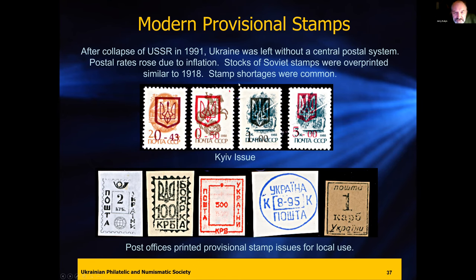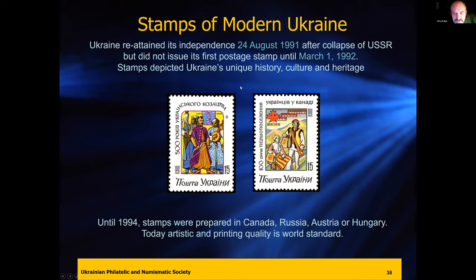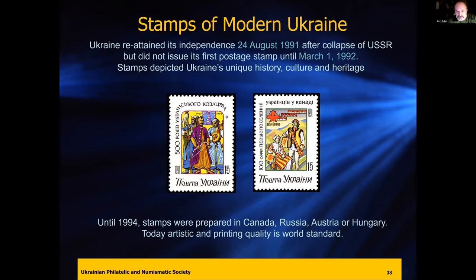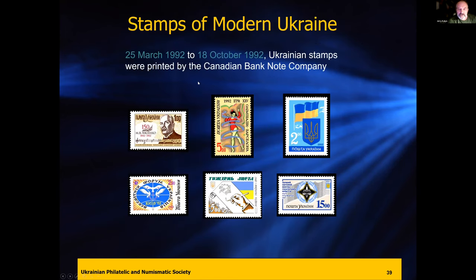After the provisional period, we have modern Ukraine — now printing legitimate stamps. At the beginning they didn't have their own facilities, so the first stamps were printed with the assistance of other countries: Canada, Russia, some in Austria or Hungary — world quality standard. These are the first two stamps: the 500 years of Ukrainian Cossackdom and the hundredth anniversary of Ukrainian Canada. The Canadian Bank Note Company printed a lot of stamps for Ukraine and also did the first set of banknotes.